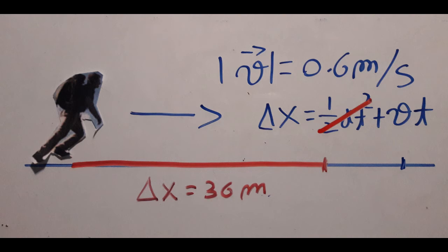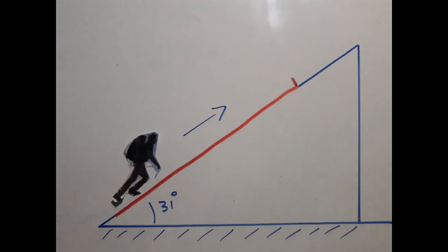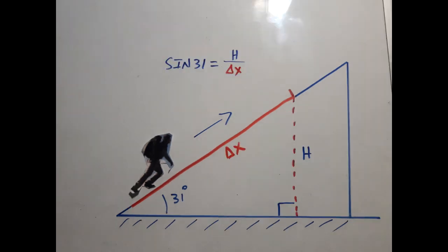But the problem asks for the height, not how far he went along the slope. In the picture, delta x is shown in red as 36 meters along the surface. Now we represent that same displacement as it actually is — the man went up at an angle of 31 degrees, traveling 36 meters in red along the slope.